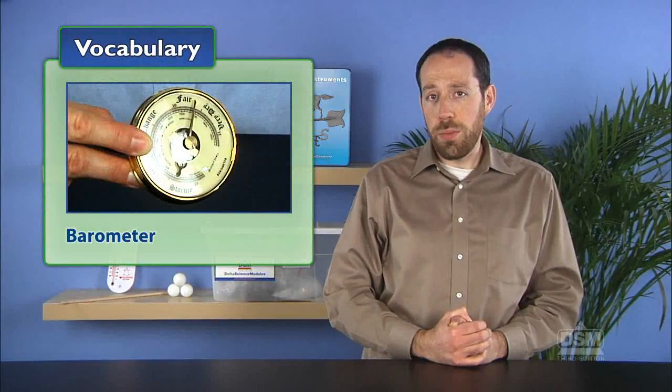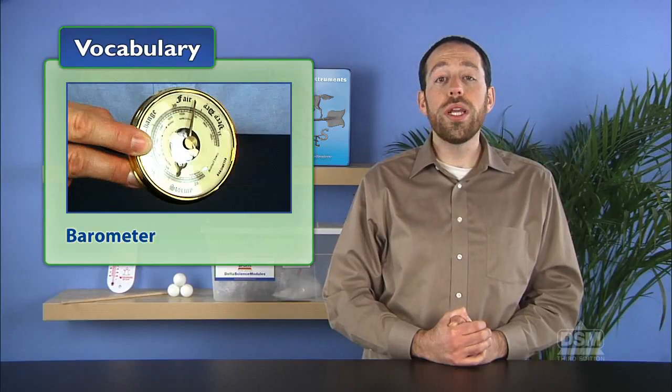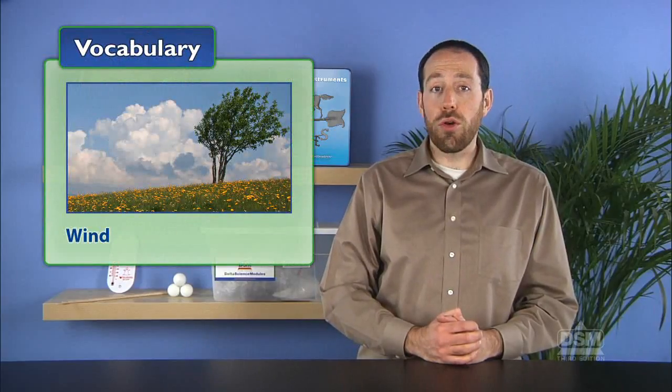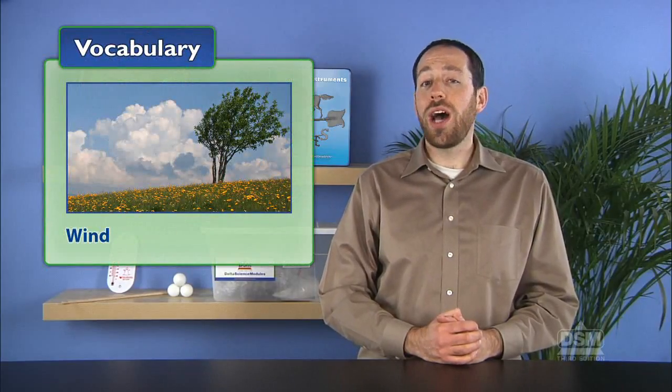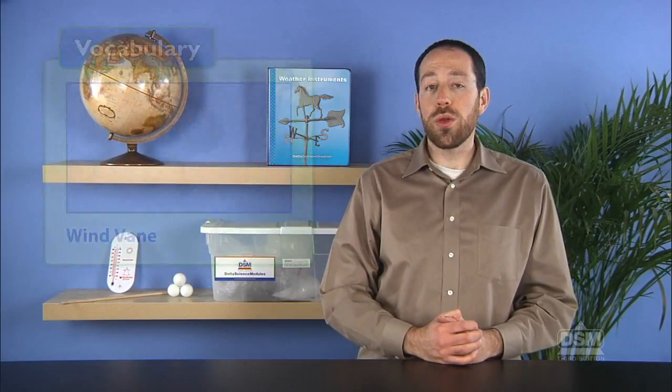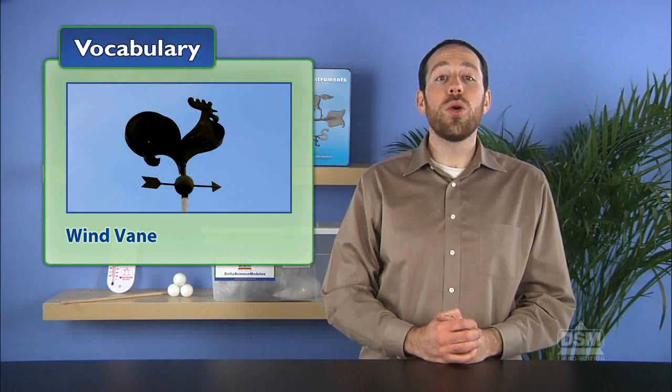Air pressure is measured with a barometer, in either millibars using the metric system, or inches of mercury using the U.S. standard. Students also discover that wind, the movement of air over Earth's surface, blows from areas of high pressure to areas of low pressure. They measure wind direction with a wind vane and wind speed with an anemometer.